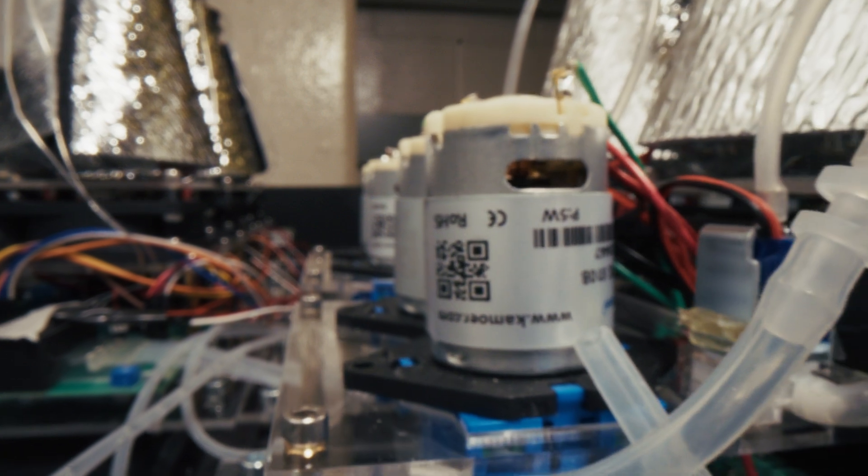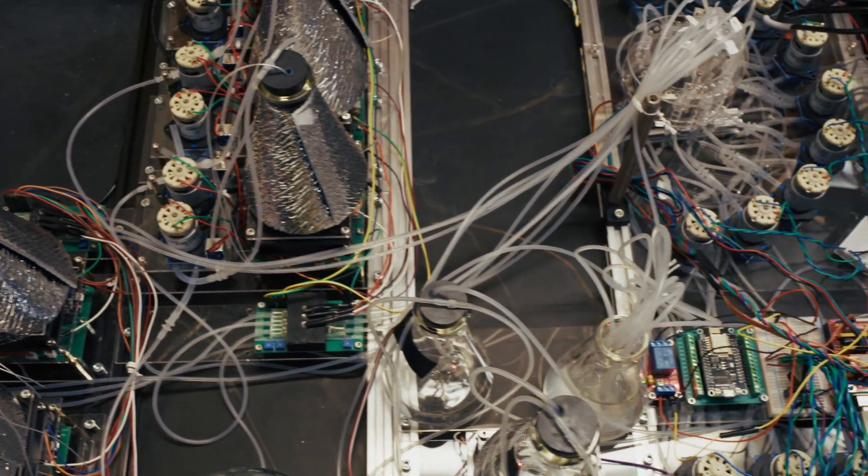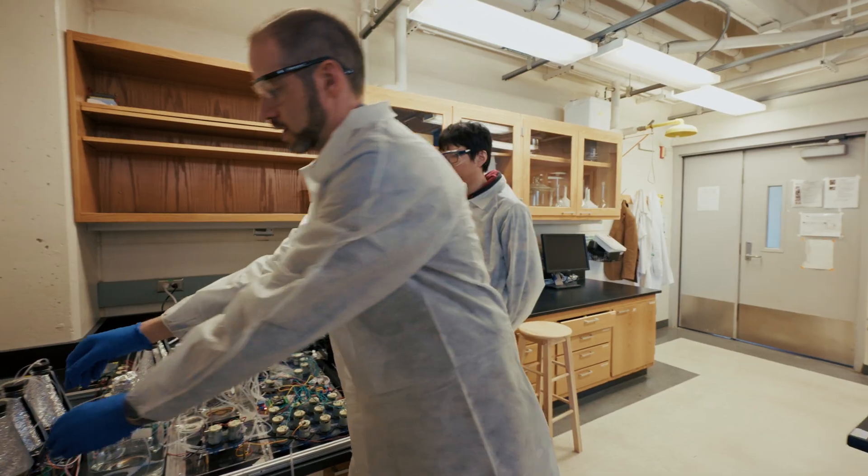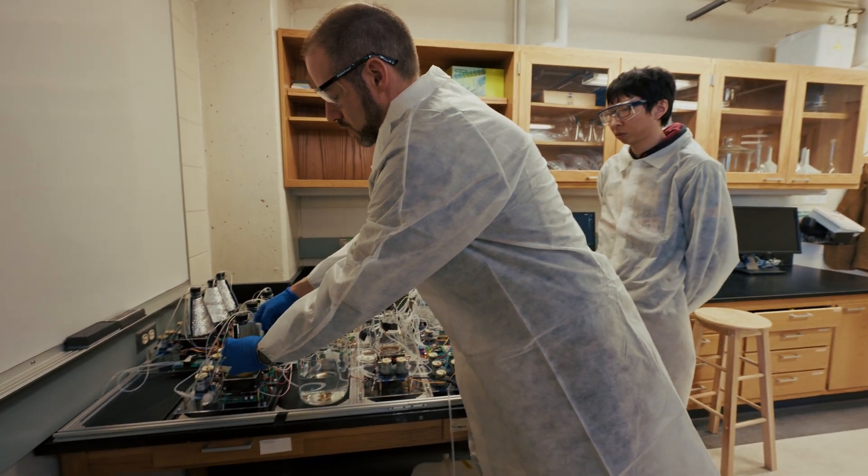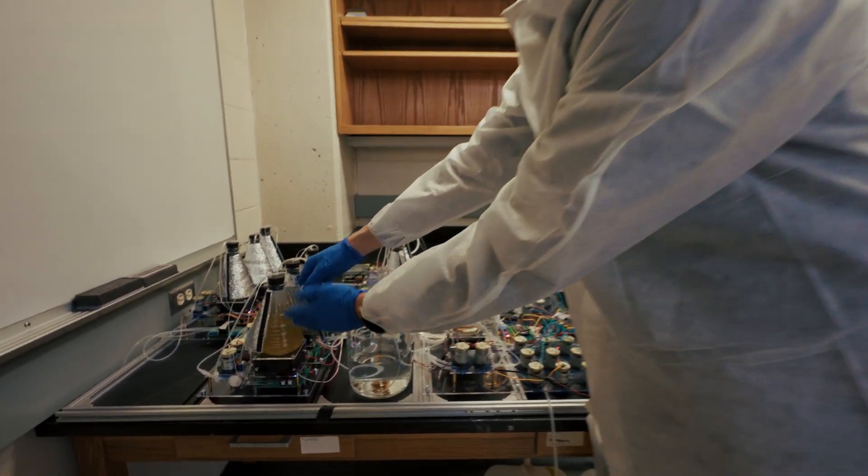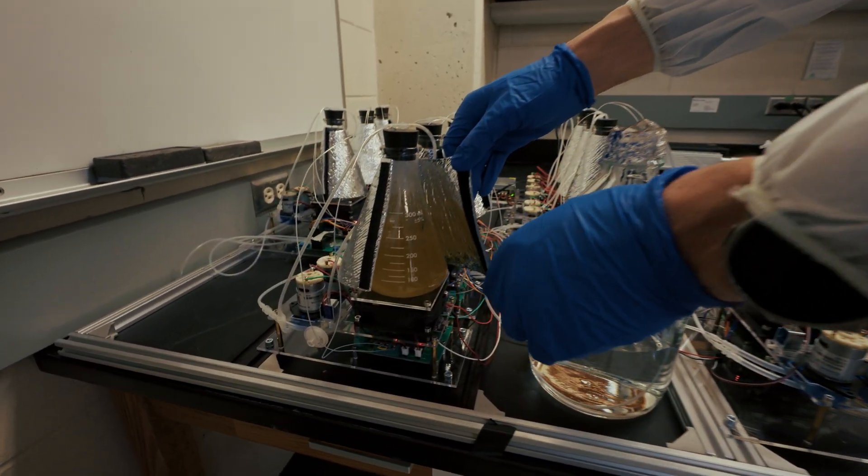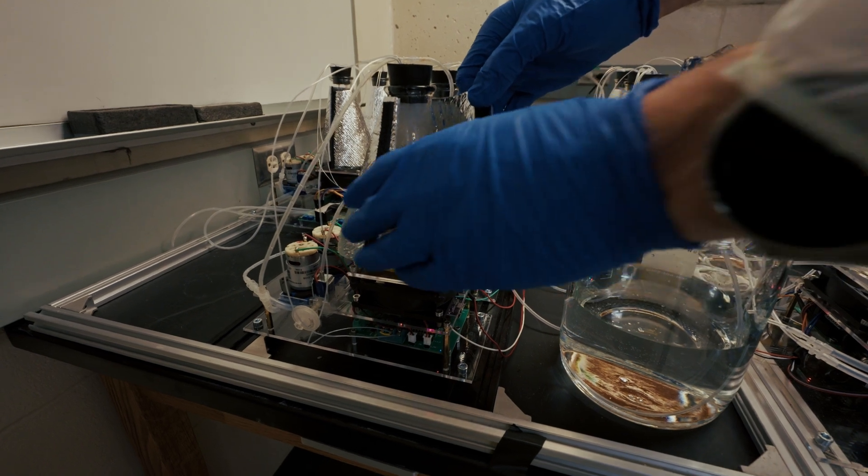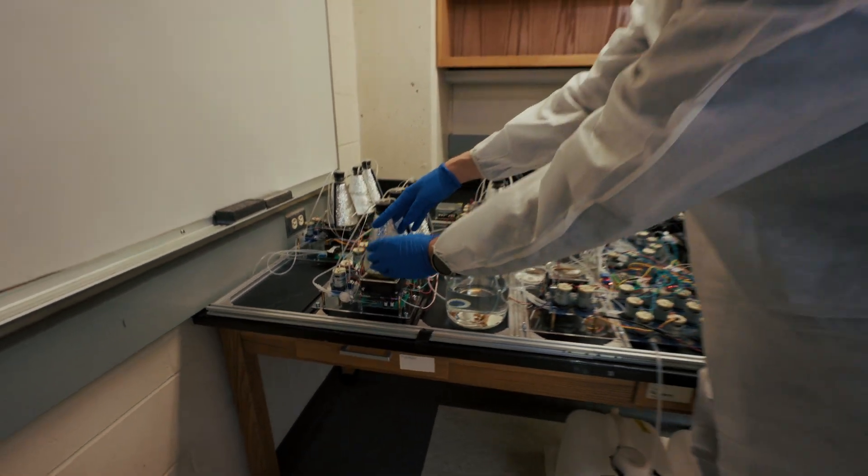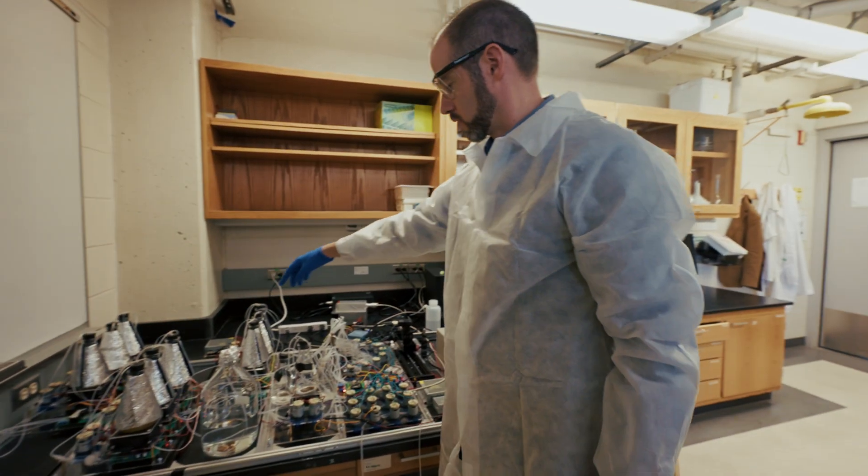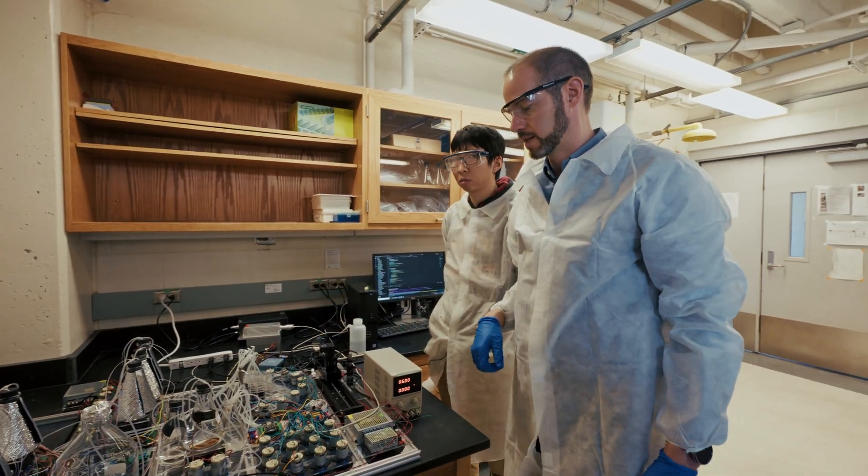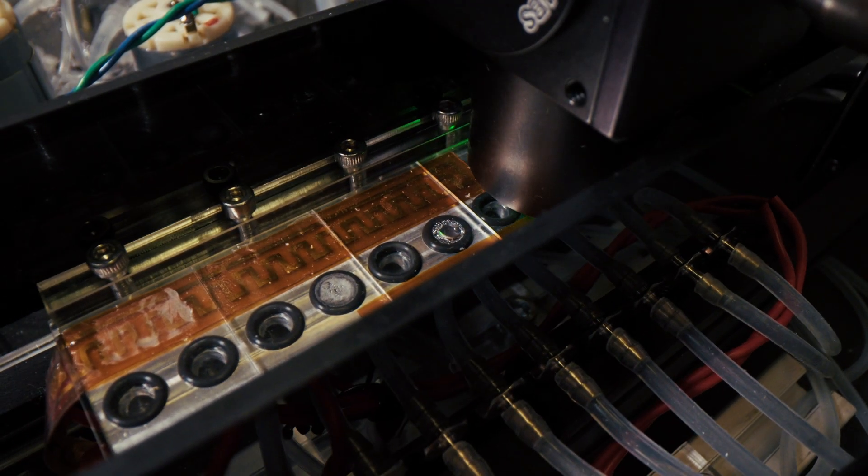What you're looking at here is an array of nine independent bioreactors. They're growing cells on the inside. We can add media to supplement as they grow, control the stir rate as well as the temperature. We sample these periodically to measure the cell concentration and enzyme activity, and all that data feeds our algorithm.